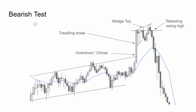Here's a bearish test. We have a bull channel and a breakout overshoots, becoming something of a climax. Within this bull flag, we get the trend line break that creates a double top retesting the swing high. The market sells for two legs lower — leg one, pull back, leg two. This is also a wedge top, which is three pushes higher.